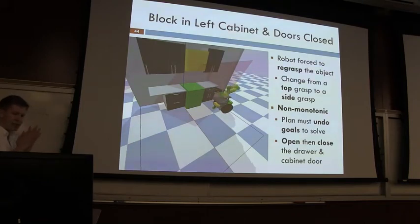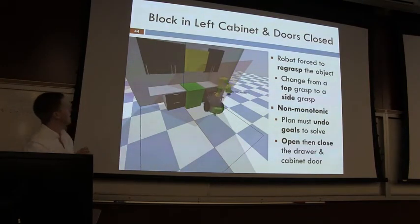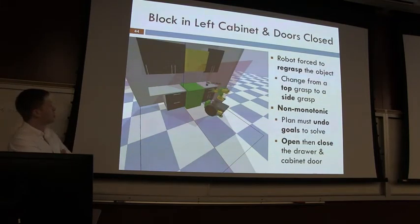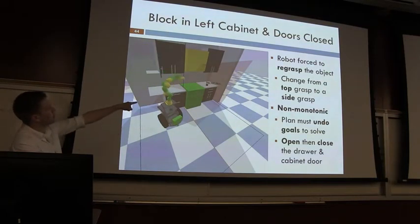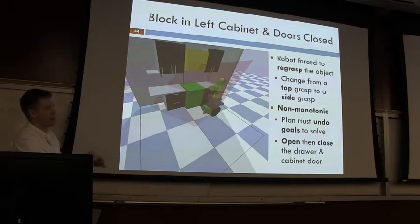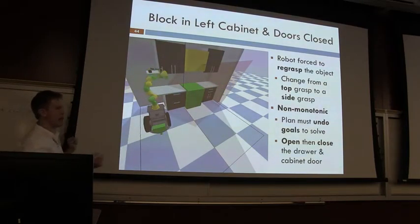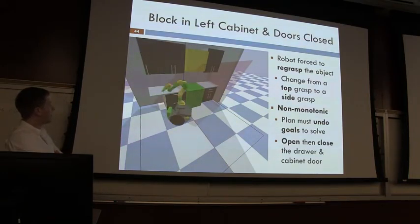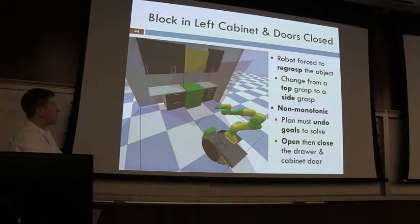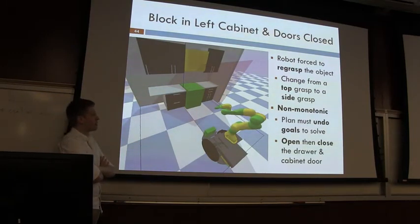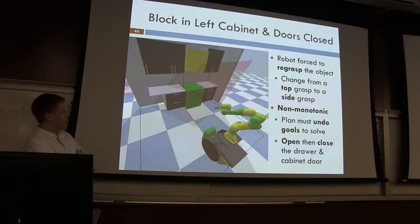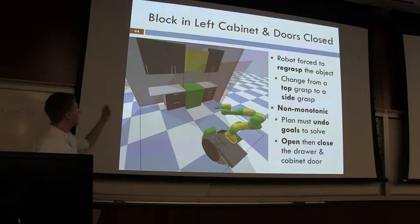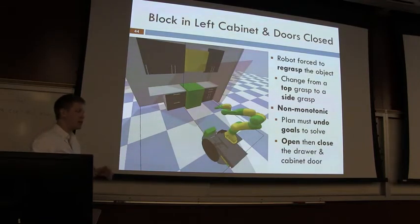Another subtle example: the task is to take a block from the top-right drawer and place it in the top-left cabinet. To do this, the robot opens both. But it drops the block momentarily — it can only pick up the block with a top grasp in the drawer, and can only place it with a side grasp, but can't get its arm high enough. The robot automatically figures out that this geometric constraint forces an intermediate pick and place. This problem also has non-monotonicity: it must open drawers and cabinets — undoing goals — to achieve other goals, which challenges most heuristics.